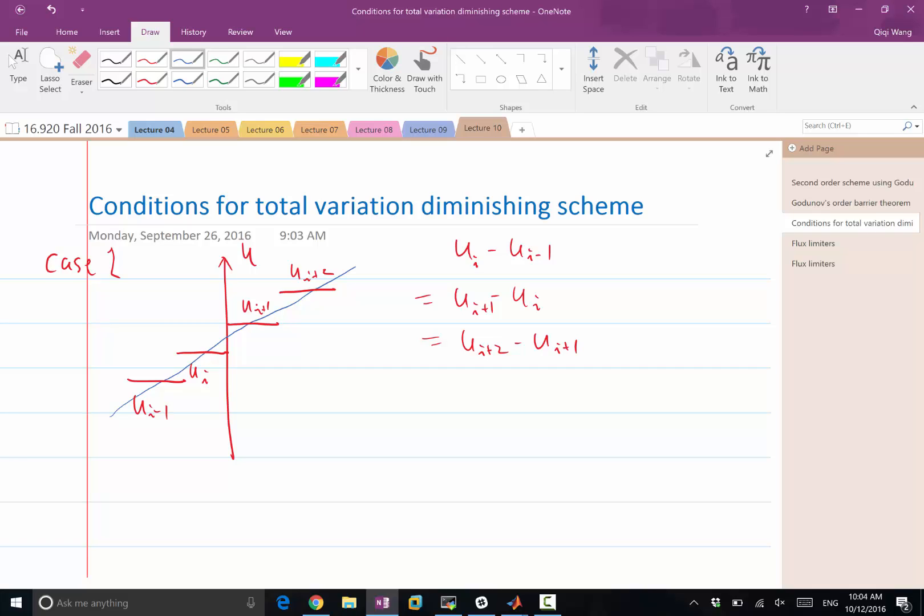Doing Taylor series analysis, linear function has the second order derivative, third order derivative, everything else is equal to 0. So if we want a second order accurate reconstruction, we need to have exactly, I want my u at i plus half left or right, both equal to ui plus ui plus 1 over 2. So that's my first case.